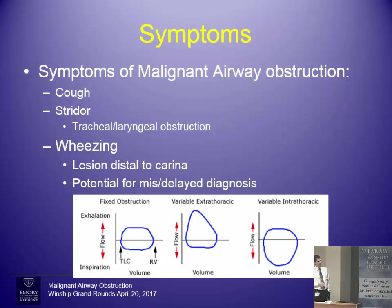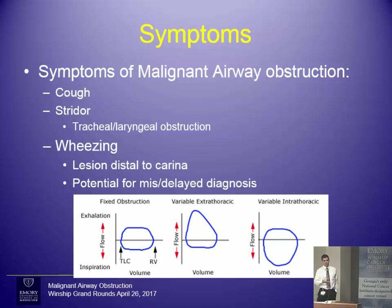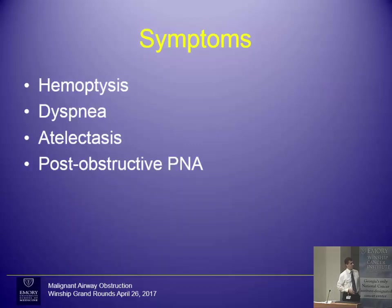On pulmonary function tests, you can see flattening of both the expiratory and inspiratory limbs depending on where the tumor is located. A fixed obstruction in the trachea produces flattening of both limbs. If there's a tumor that obstructs just during exhalation or just during inspiration — a variable obstruction — you can see flattening of either the inspiratory or expiratory limb. Sometimes this is the first way these patients come to medical attention: you notice something abnormal on the pulmonary function test.